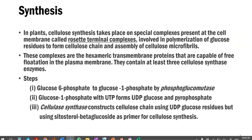Now we look at the synthesis of the cellulose molecule. In plants, cellulose synthesis takes place on special complexes present at the cell membrane, referred to as rosette terminal complexes. It involves polymerization of glucose residues to form cellulose chains and assembly of the cellulose microfibrils. These complexes are hexameric transmembrane proteins capable of free flotation in the plasma membrane, and they contain different enzyme systems that help in cellulose synthesis.